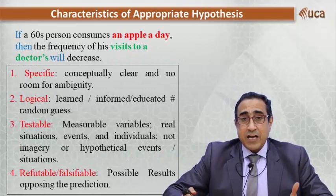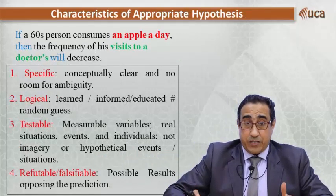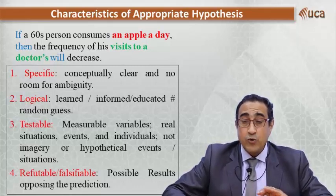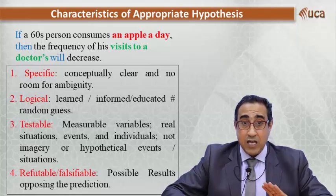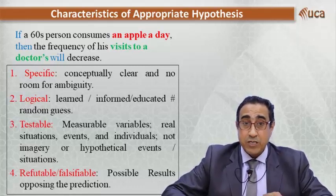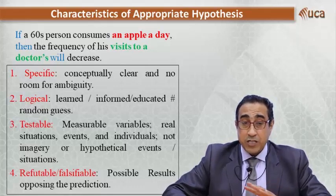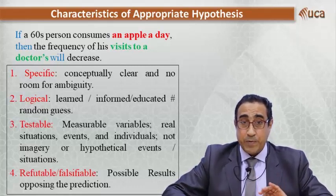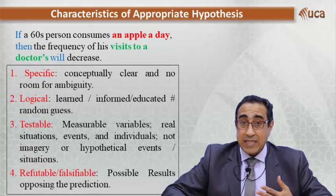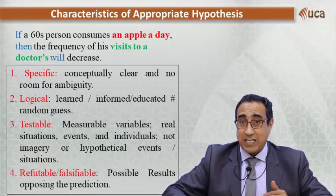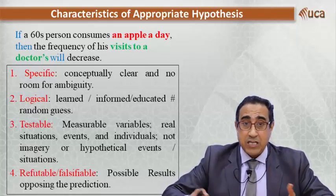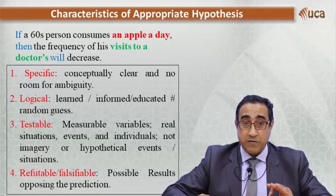Now, what are the characteristics of an appropriate hypothesis? First, it should be specific — clear, with no room for ambiguity. In our example, we are talking about a person over 60, not youth or children, so it is specific about the age group. We are talking about an apple a day, not any other food. And we focus on counting the visits to the doctor. That is why it is specific.